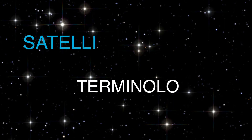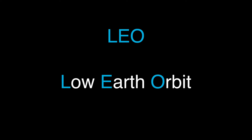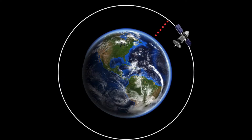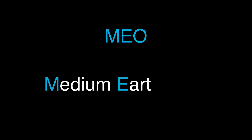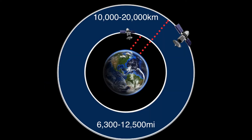LEO, or low earth orbit, is where satellites are positioned at an altitude between 160 and 1600 kilometers above earth. MEO, or medium earth orbit, is where satellites operate from 10,000 to 20,000 kilometers above earth.